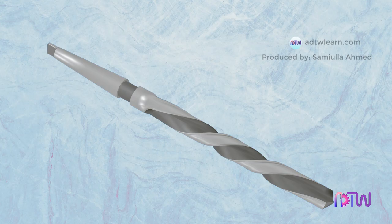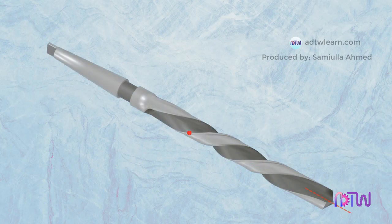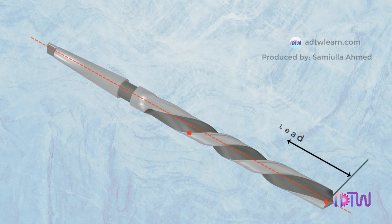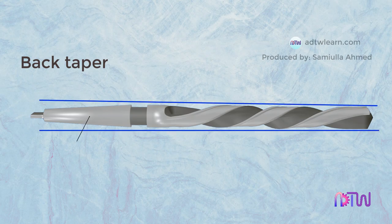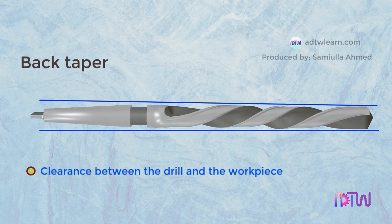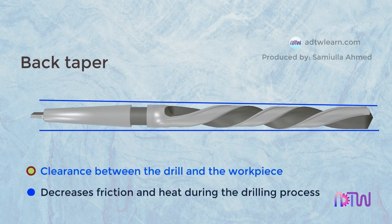Lead: consider any point on the leading edge — after one revolution, the same point appears again on the leading edge. The distance measured parallel to the drill axis between these two points is called the lead. Back taper: the diameter of the drill reduces towards the shank; this reduction is known as back taper. It provides clearance between the drill and the workpiece, which decreases friction and heat during the drilling process.